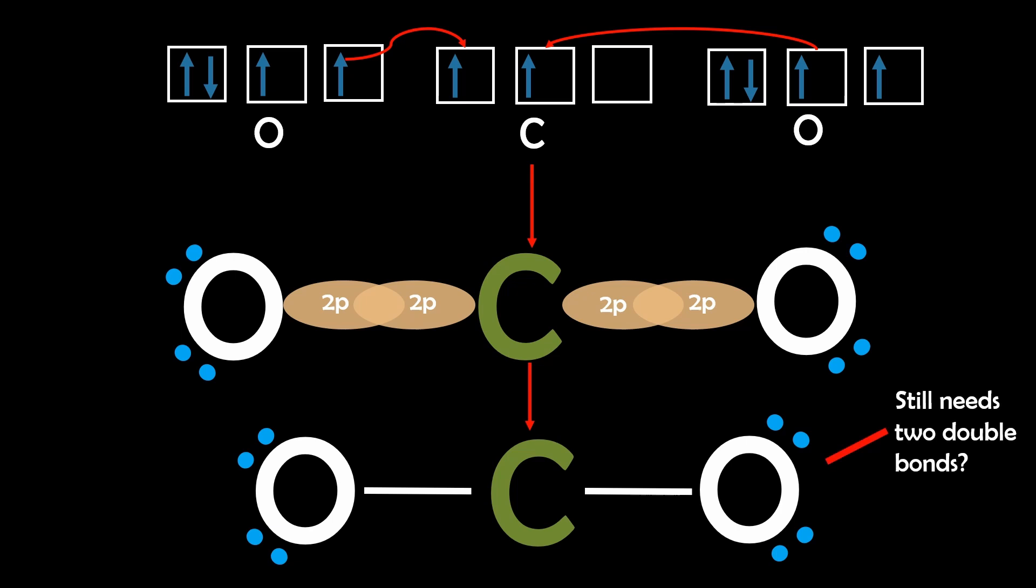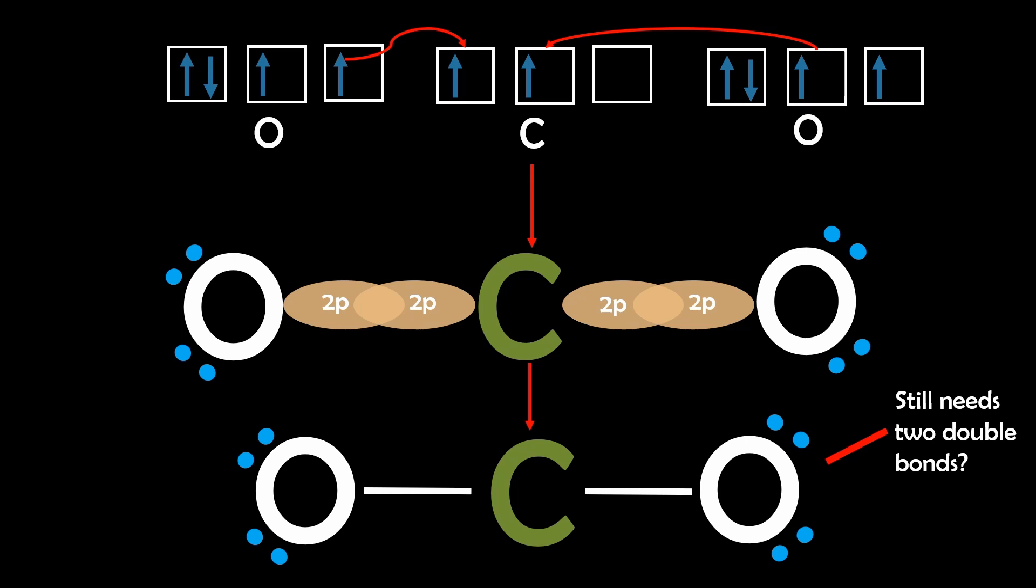So how does it form four bonds considering there are no more unpaired carbon electrons? This is where hybridization comes into play.